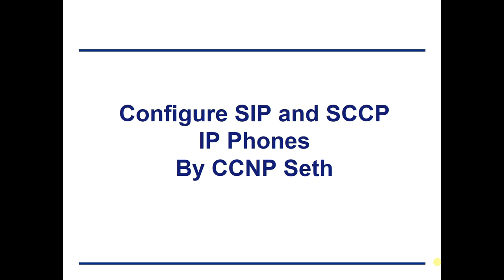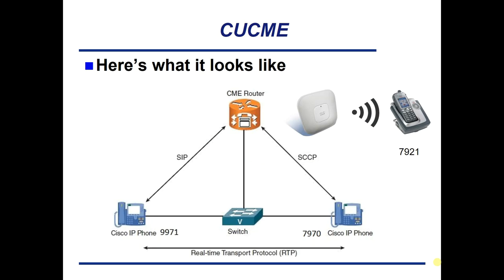Today I'm going to be talking about how to configure SIP and SCCP IP phones. I'm your host CCMP Seth. The topology has a 3825 CME router connecting to a 3750 switch which powers my phones. I have the 9971 using SIP (Session Initiation Protocol), a 7970 using the Skinny protocol, and a 7921 wireless phone. My CME router is also doubling as a wireless LAN controller — a pretty cool VoIP home lab.